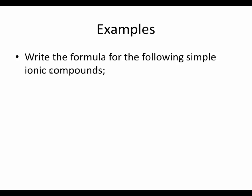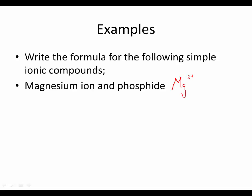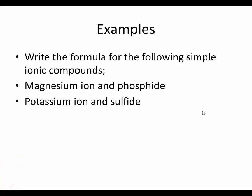Write the formula for the following simple ionic compounds. The magnesium ion and the phosphide ion: Mg with a two plus charge, and P three minus. We need three magnesiums and two phosphides. If you've got three magnesiums, the total positive charge is plus six; if you have two phosphides, you have a total of negative six. Six positive plus six negative gives no charge. So it would be Mg3P2.